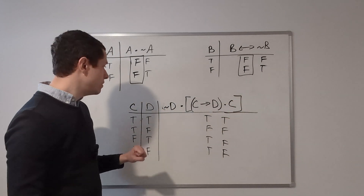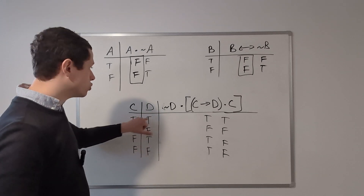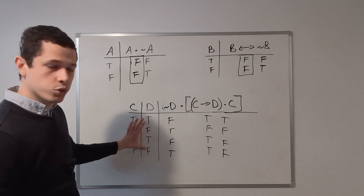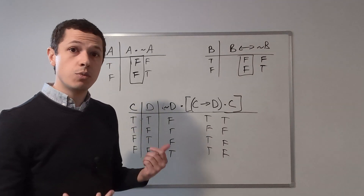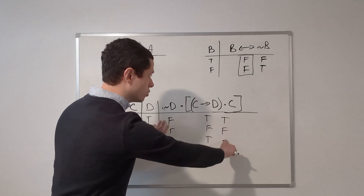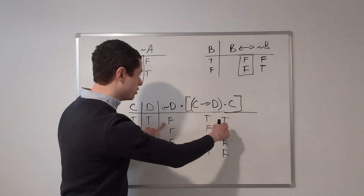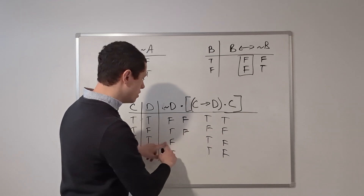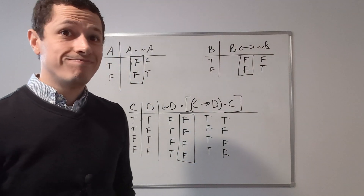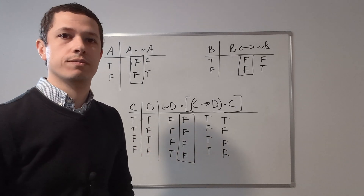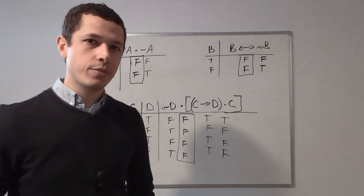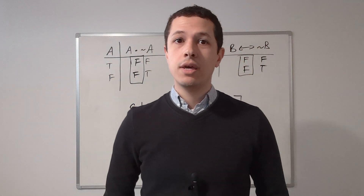Now let's calculate not D. The negation just flips the truth value: if D is true, not D is false; if D is false, not D is true — giving us false, true, false, true. Now we calculate the main connective, conjoining not D with the bracketed values: false and true is false. True and false is false. False and false is false. True and false is false. Every row is false, so this complicated compound statement is indeed a contradiction. Sometimes contradictions hide in plain sight — it's a good thing we have truth tables to make that explicit.